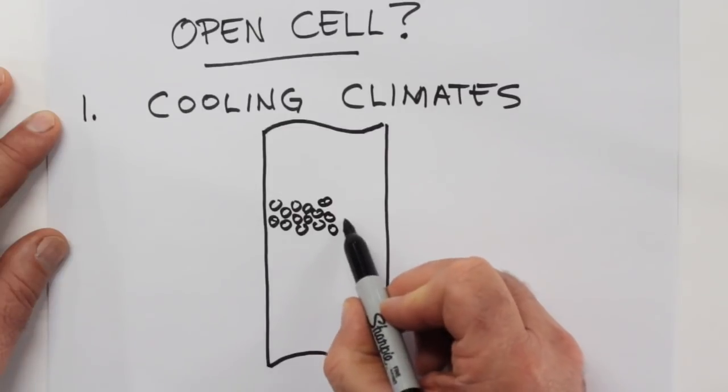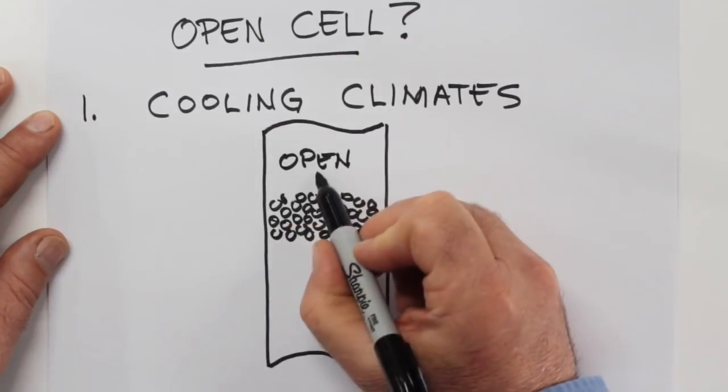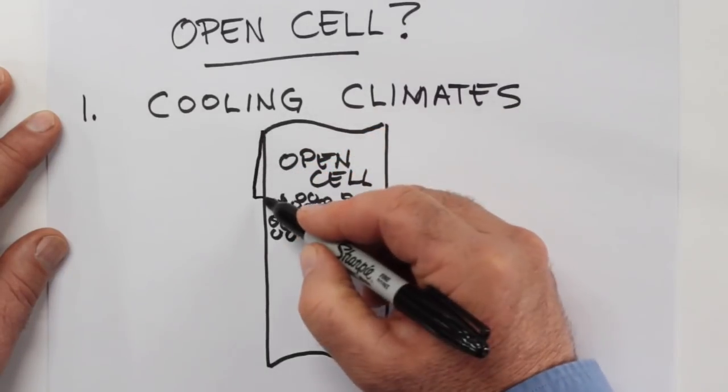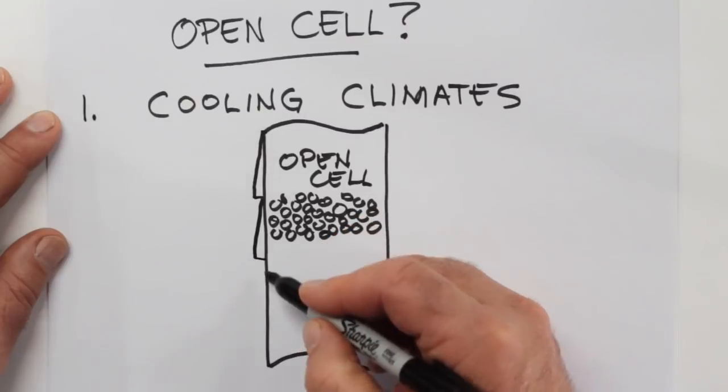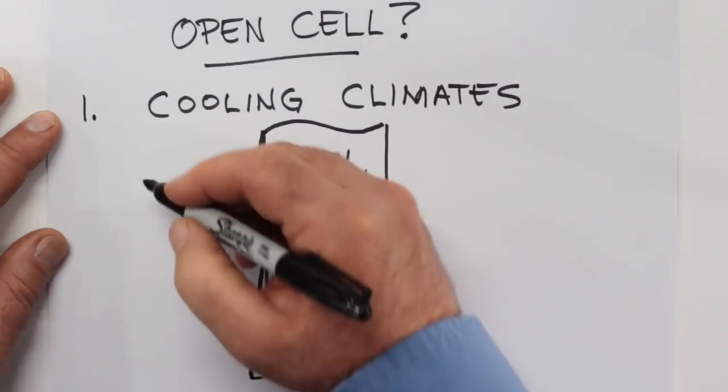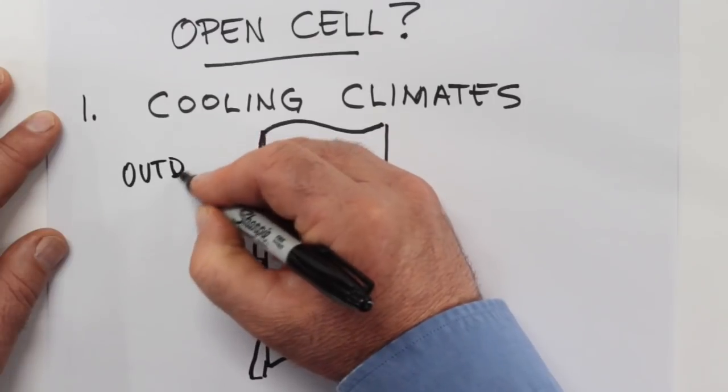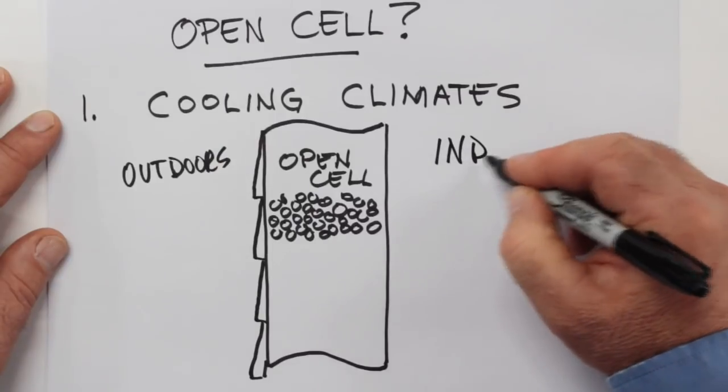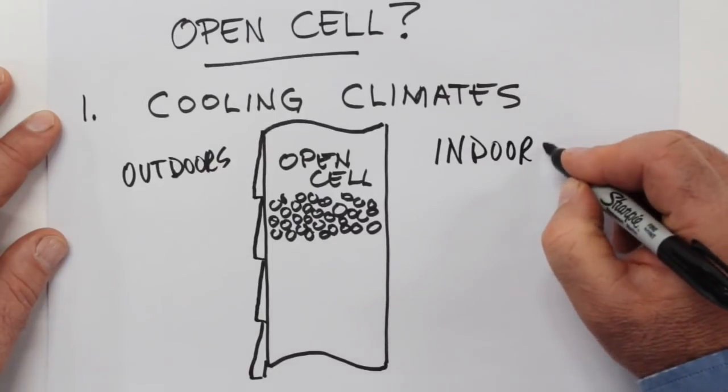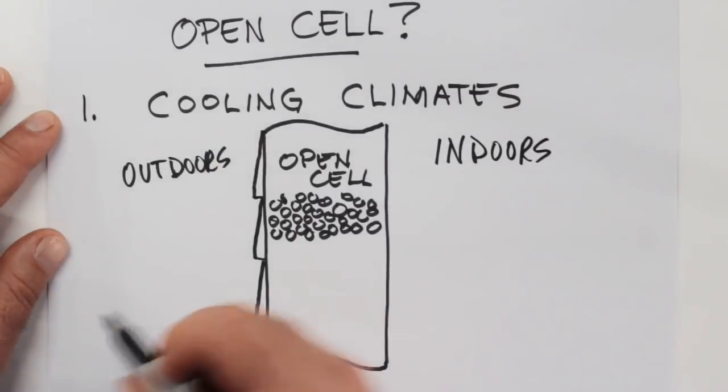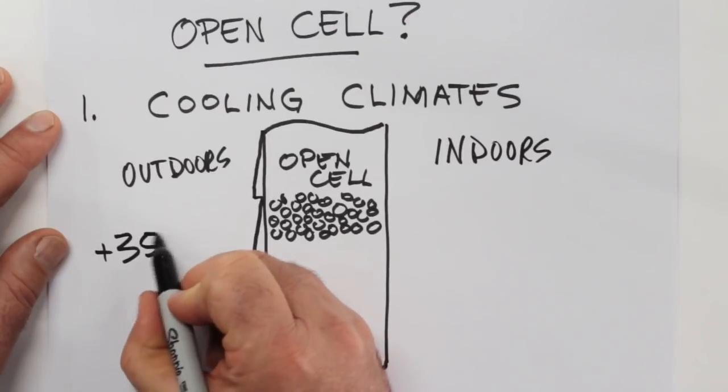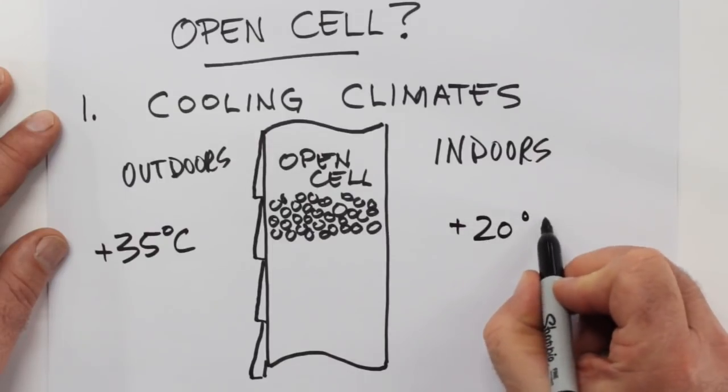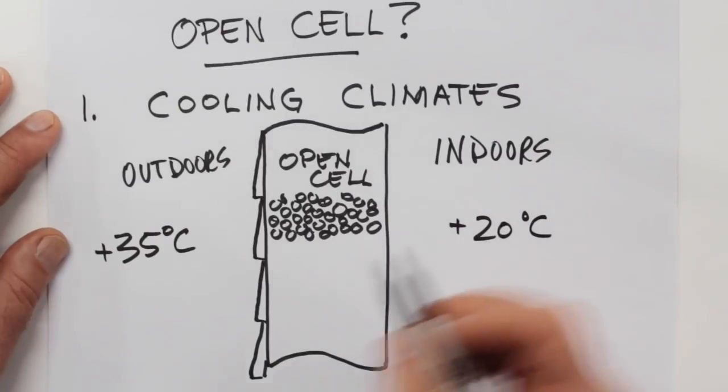Now let's put some open cell foam inside this structure, and on the exterior of the structure let's put on some sort of weatherproof covering. It's going to shed water, but you can't really rely on it to prevent the movement of water vapor. So you've got the outdoor side of the structure and the indoor side, and there's a temperature gradient between the two, but it's reversed compared with our previous example. Let's say it's plus 35 C outside and the cooled air conditioned temperature inside is plus 20.